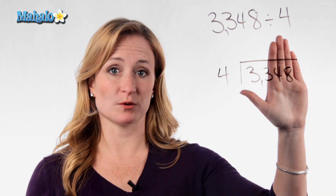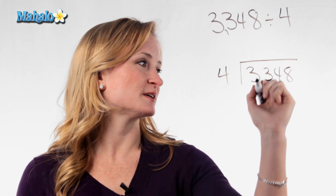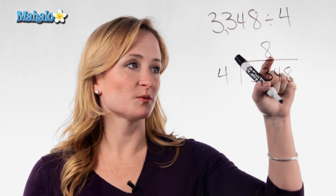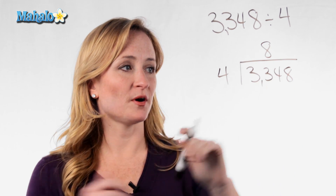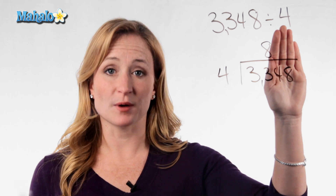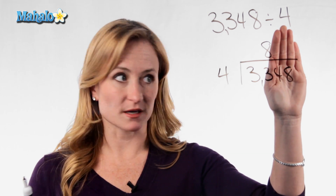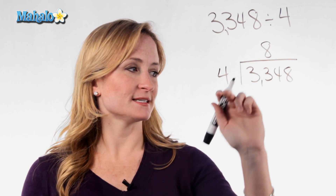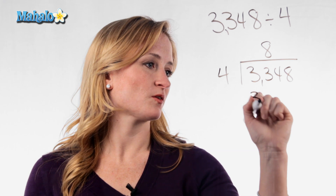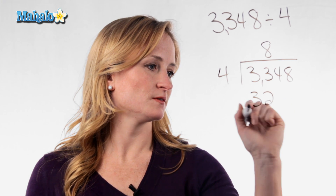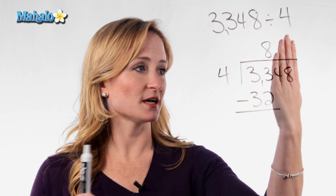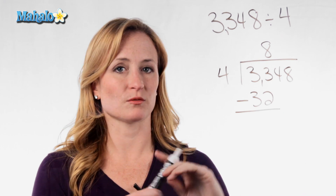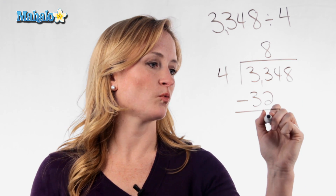So you move it over. Can 4 go into 33? Yep. How many times? 8 times. Now you're going to put that 8 above that second 3 because we're now talking about the 33. 4 goes into 33. Now multiply 8 times 4, and that's 32. You're going to subtract — just subtracting that 32 from that 33. We have one left.